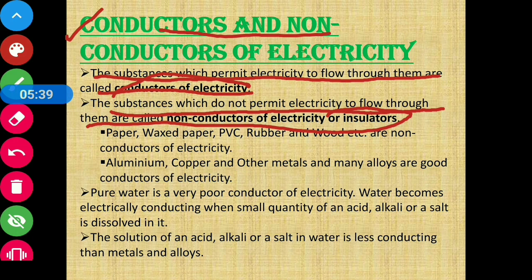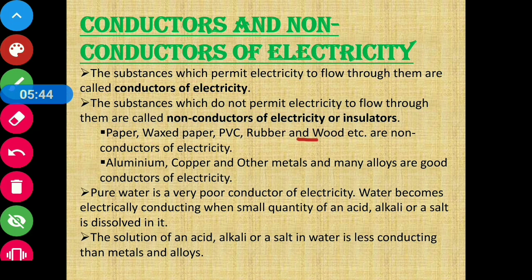Examples of non-conductors of electricity, also called insulators, include paper, waxed paper, PVC, rubber, and wood. Examples of conductors of electricity include aluminum, copper, other metals, and many alloys.